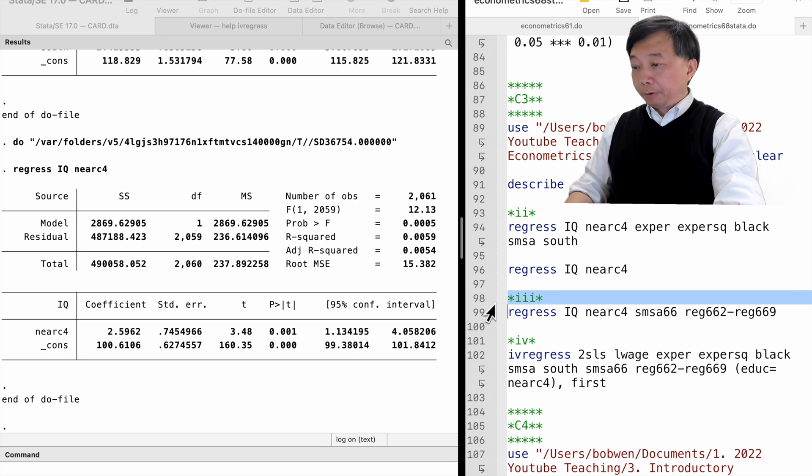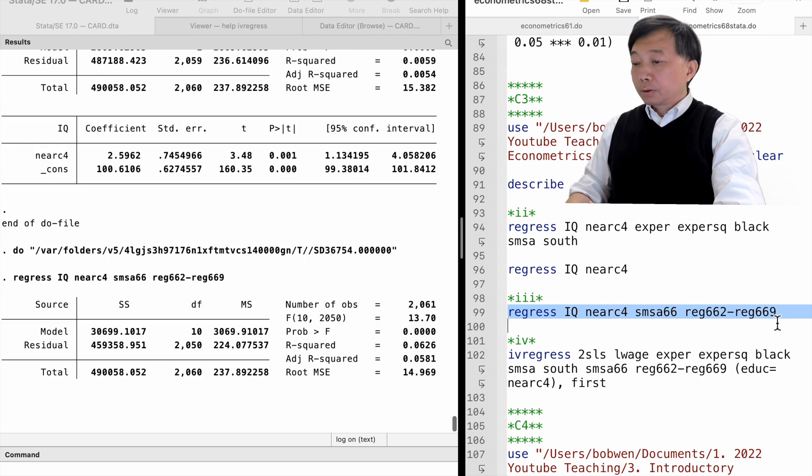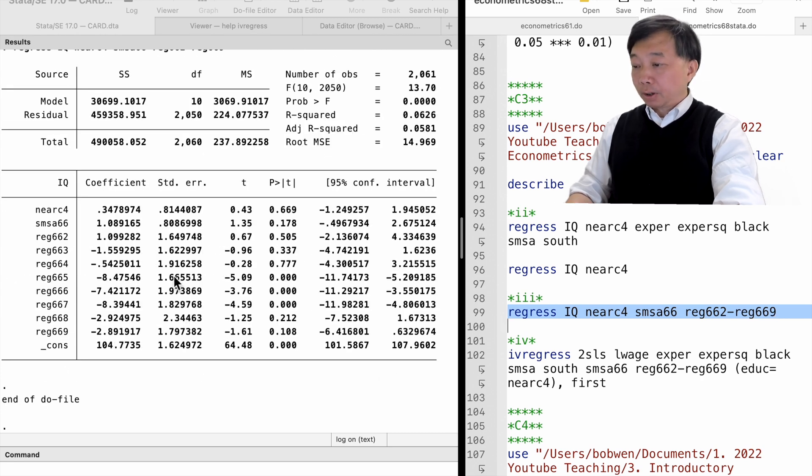Adding the geographic dummy variables to the model, we find that the coefficient on near C4 is no longer statistically significant at any reasonable level. It makes sense because near C4 is correlated with the geographic dummies and it becomes insignificant after the geographic effects are partialed out.